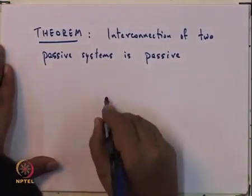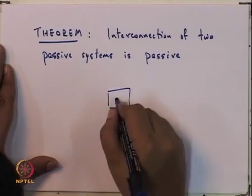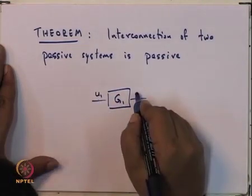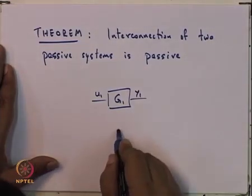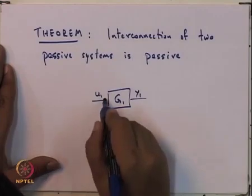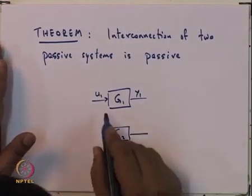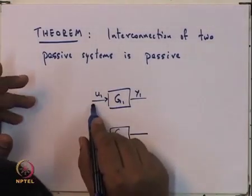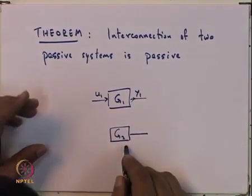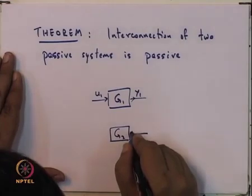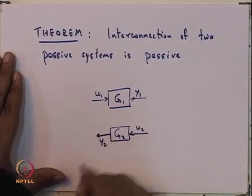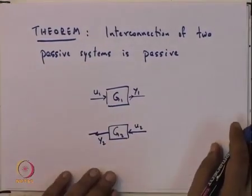So, what do I mean by this interconnection? So, let me assume this is system 1, let me call it G1. So let me call the input U1 and the output Y1. Let me have a second system G2. So, input, you see when you are talking about input and output, one needs to probably draw an arrow so that it is clear what is the input and what is the output. So, U1 is the input and Y1 is the output, and let us have another system G2 and this system has U2 as the input and Y2 as the output.